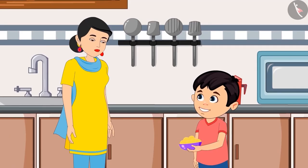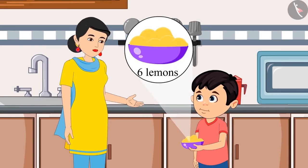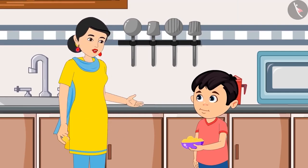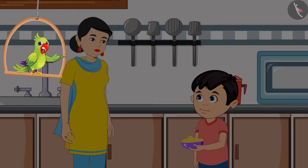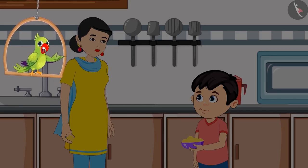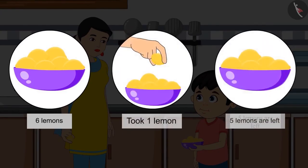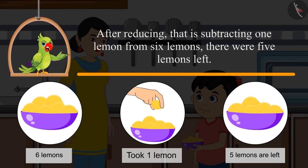Choto says: 'Take this mommy, how many lemons do you need to make one glass of lemonade?' His mother replies: 'Oh Choto, you got six lemons! I just need one lemon, thank you. Now please keep the remaining lemons back inside the fridge.' Out of the six lemons, Choto's mother took one lemon, so now there are five lemons left.